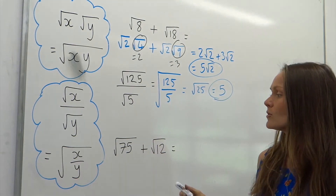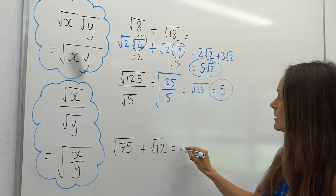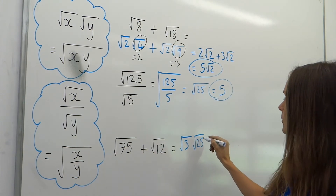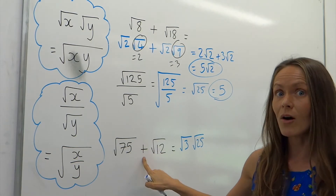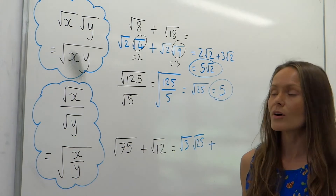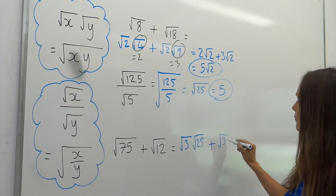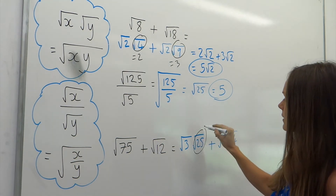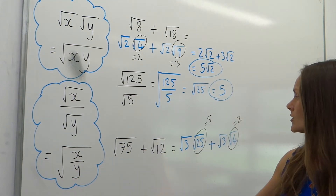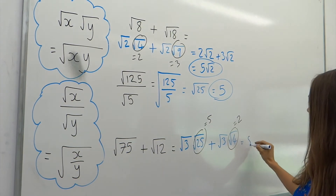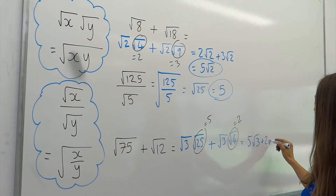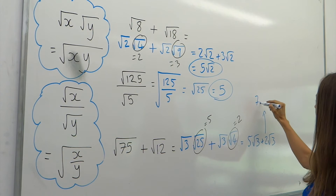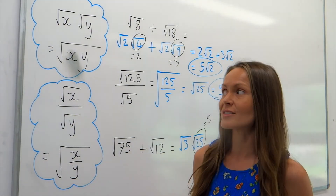For the last one I'm going to split up into factors. I rewrite root 75 as root 3 times root 25 because 3 times 25 is 75 and 25 is a square number. Don't forget you're adding them together. I rewrite root 12 as root 3 times root 4 because 3 times 4 is 12 and 4 is a square number. The square root of 25 is 5 and the square root of 4 is 2, so I've got 5 root 3 plus 2 root 3, which equals 7 root 3.